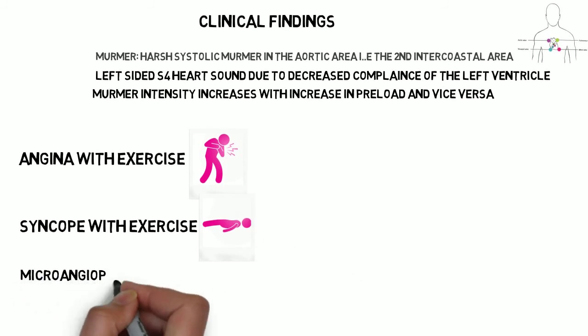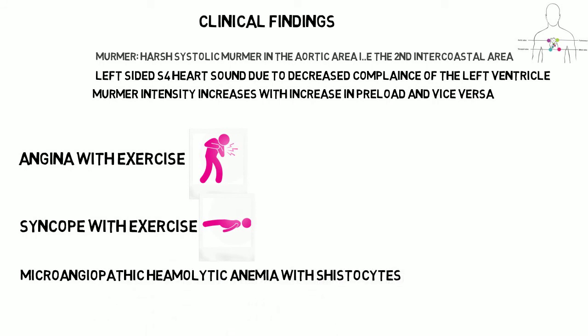There is also microangiopathic hemolytic anemia. This is a type of anemia that arises whenever there is a pathology of the blood vessels. In aortic stenosis, RBCs passing through small blood vessels get sheared, and these sheared RBCs are called schistocytes. These schistocytes eventually get damaged and destroyed in the spleen. So we get anemia with production of schistocytes — a very important finding in aortic stenosis.